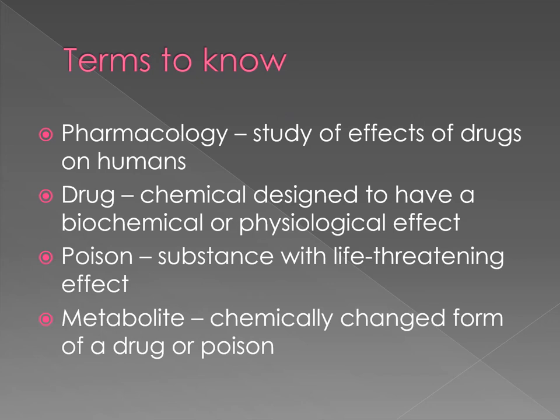Some basic terminology to know: pharmacology is about drugs and their effects in the body. The drug itself is a chemical that has an effect upon the body. A poison is a type of drug that is life-threatening, and a metabolite is when your body metabolizes the drug or substance that is put into the body and it is chemically changed.